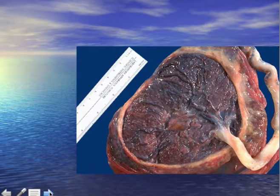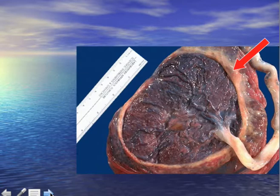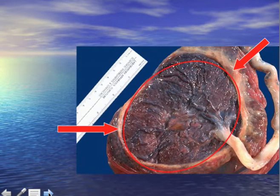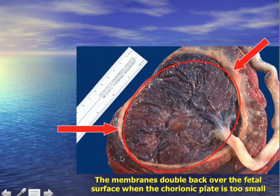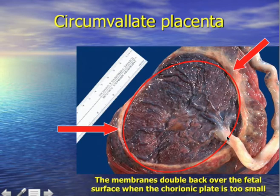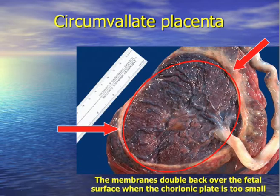Here is another variation called the circumvallate placenta. You can see a wall here — that's why it's called circumvallate. The membranes are actually double-packed over the fetal surface, and it appears that the chorionic plate is too small, so we have just a thick wall here. A circumvallate placenta is not associated with pathology or growth restriction. It's just a variation, which usually is noted after the baby is born.